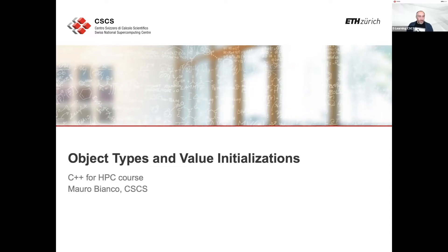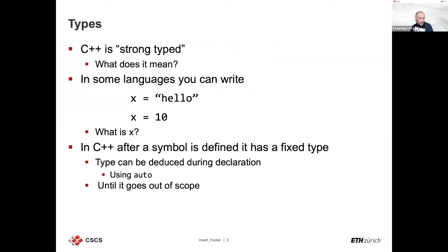One important topic is types and values in C++. You've probably heard several times that C++ is a strongly typed language. What does that mean? In many languages like Python, you can write x equal 'hello' and then x equal 10, and you might ask: is x a string or an integer? In C++, after a symbol is defined in a certain scope, it has a certain type, and that is its type — it cannot be changed. This is super important for safety and for always knowing that you cannot change things underneath the covers.